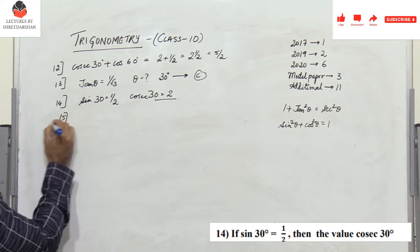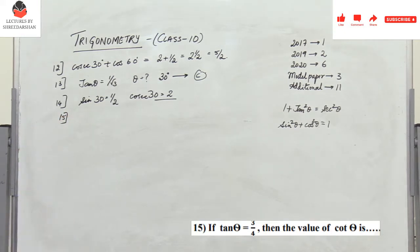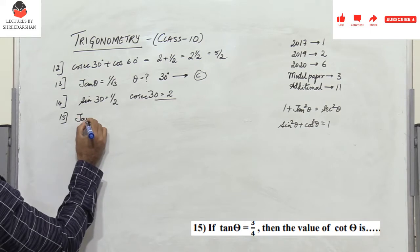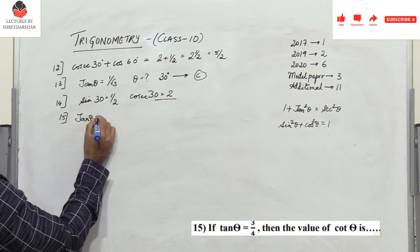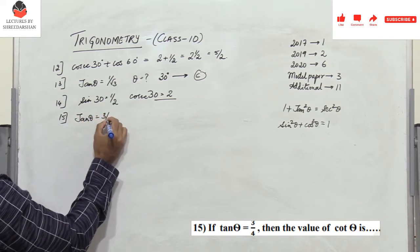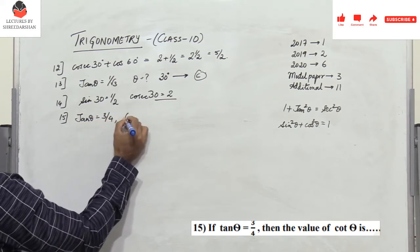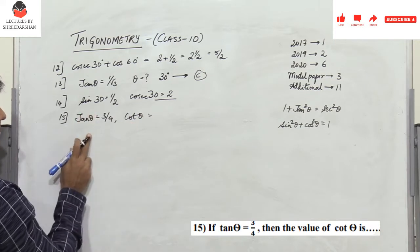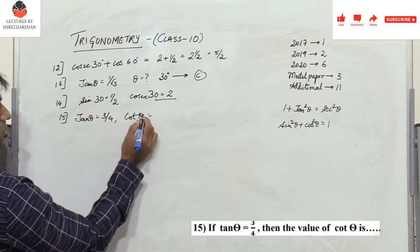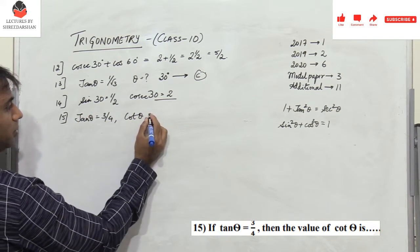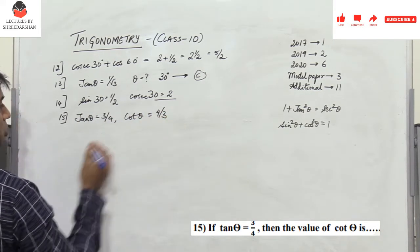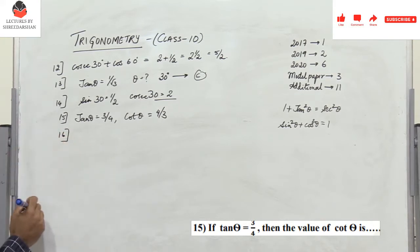Problem 15: tanθ = 3/4, find cotθ. Since cotθ = 1/tanθ, the reciprocal of 3/4 is 4/3.